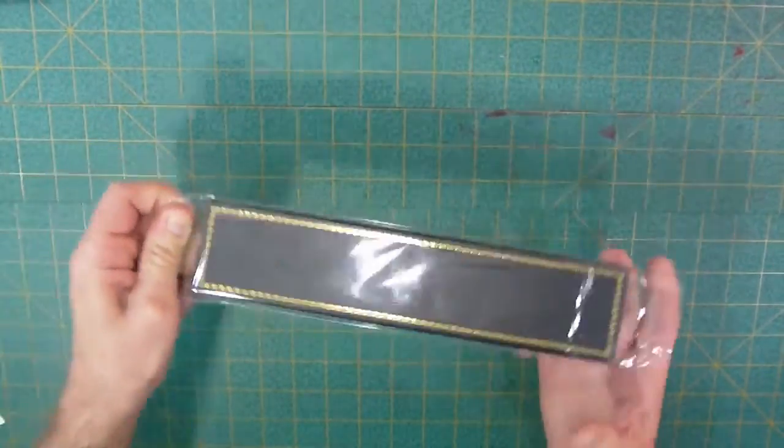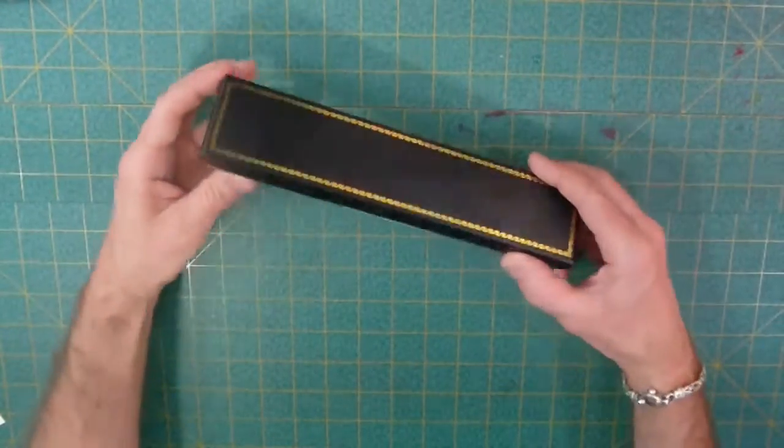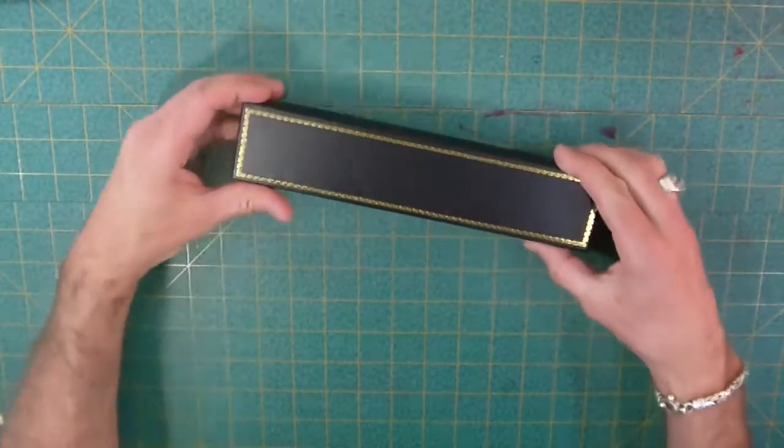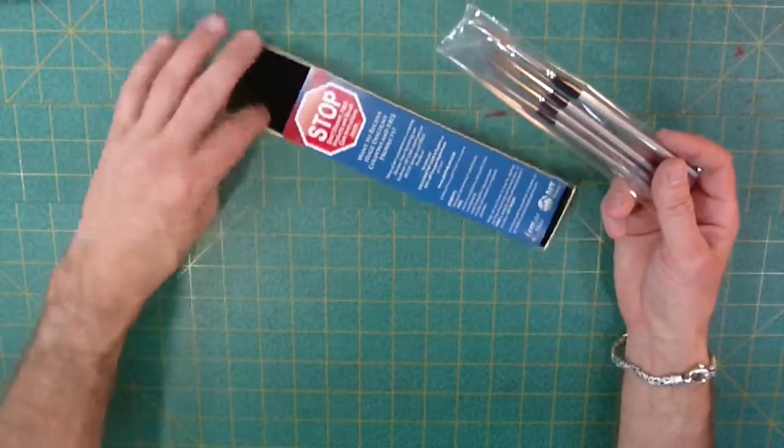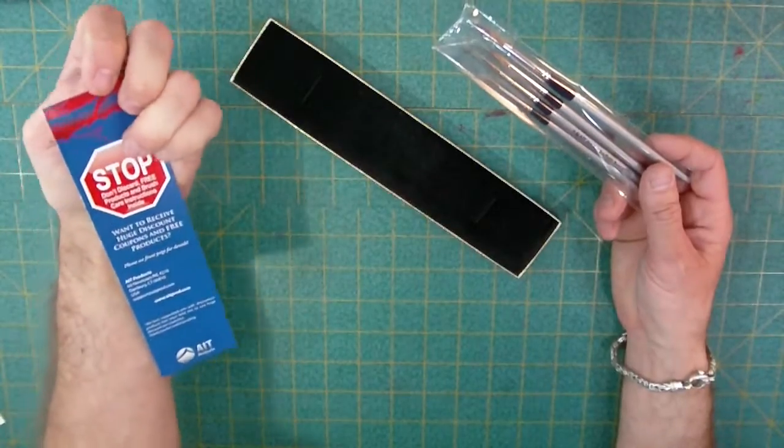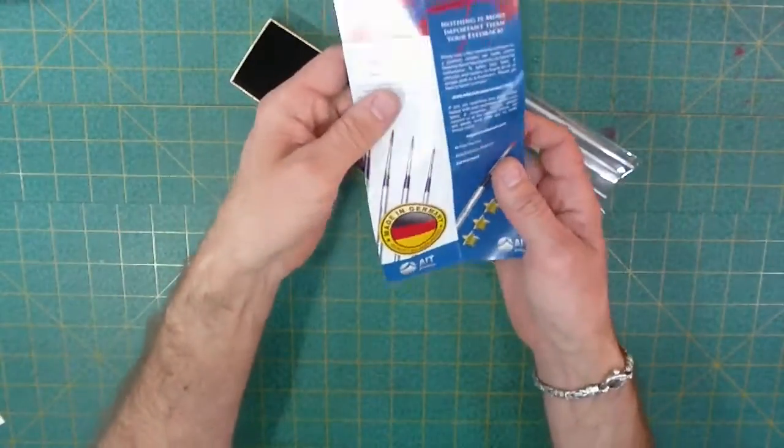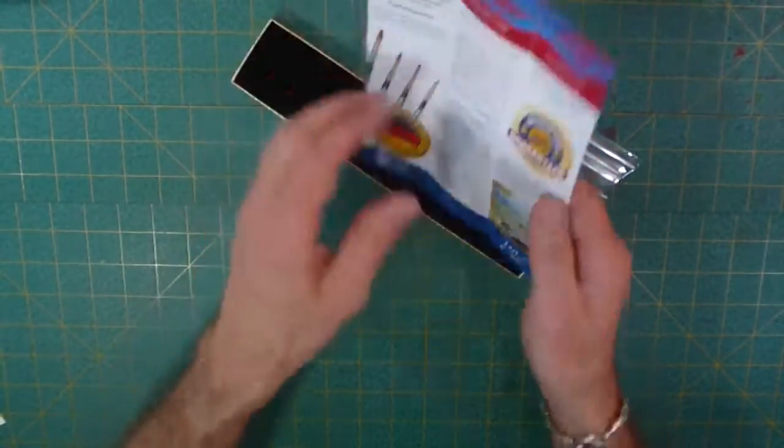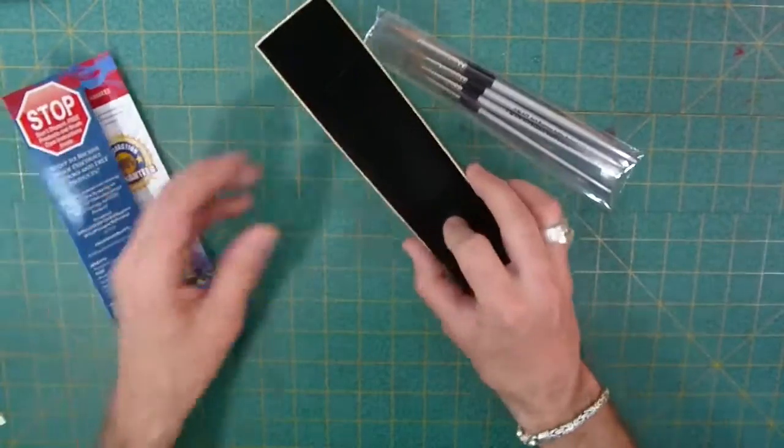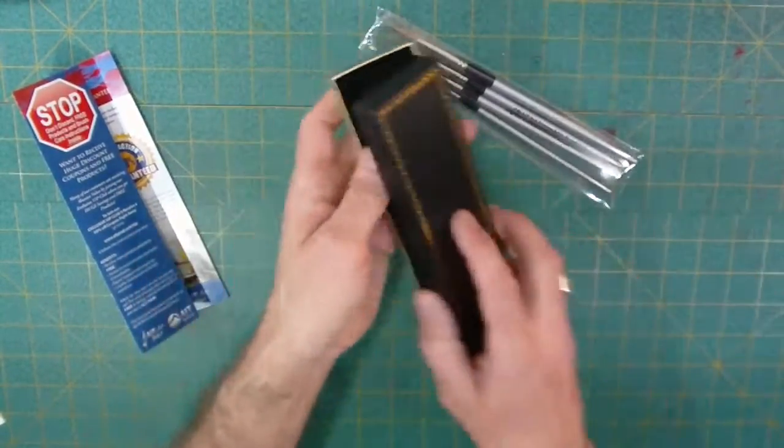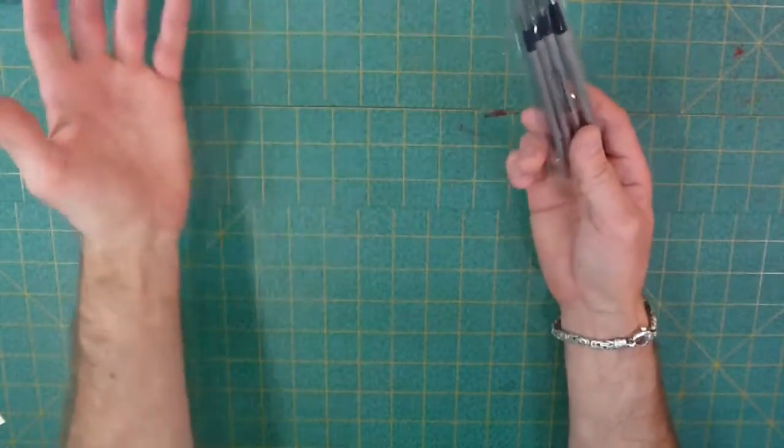They come in a nice plastic bag over top of what looks like a pretty nice cardboard case. There we go. And here are the brushes. Oh, this is an invitation to join their paintbrush club or their products club. There's nice soft foam. Okay, here we go, let's actually get to the brushes.